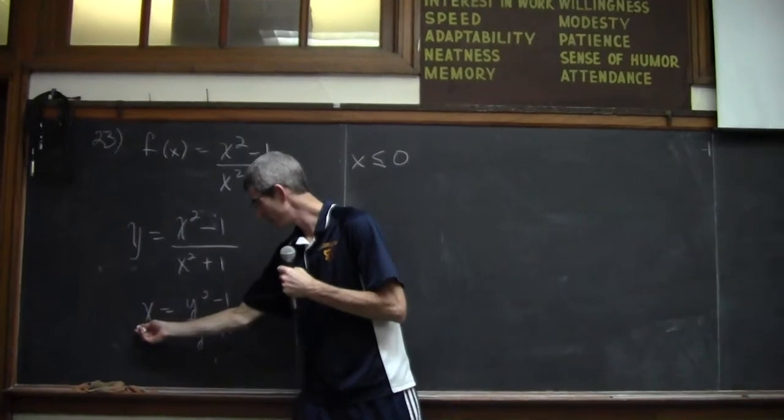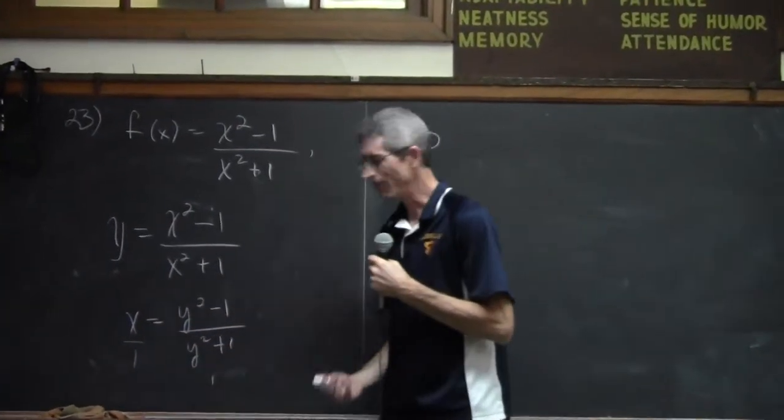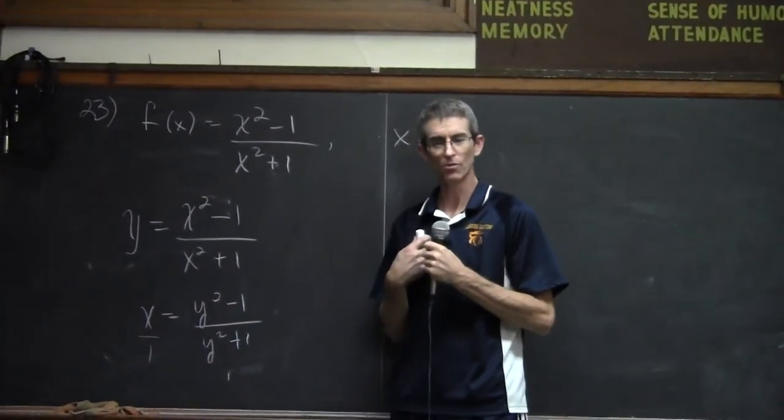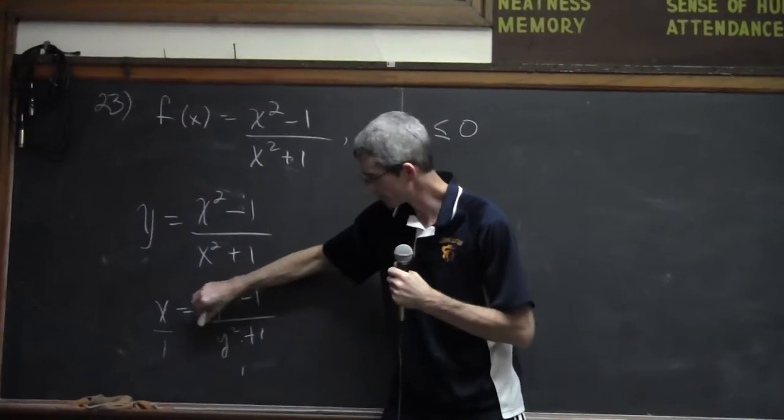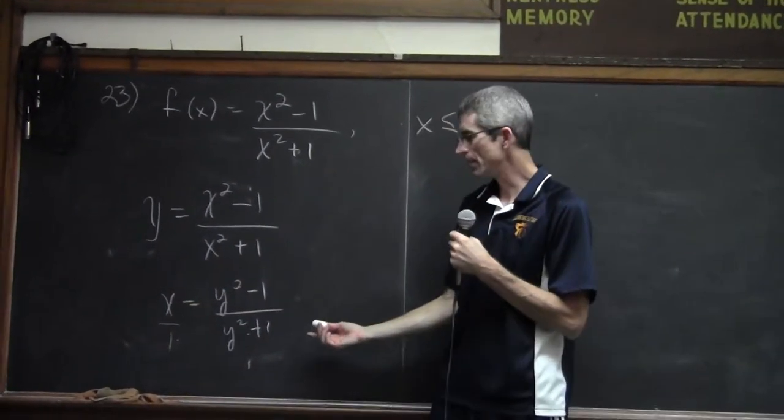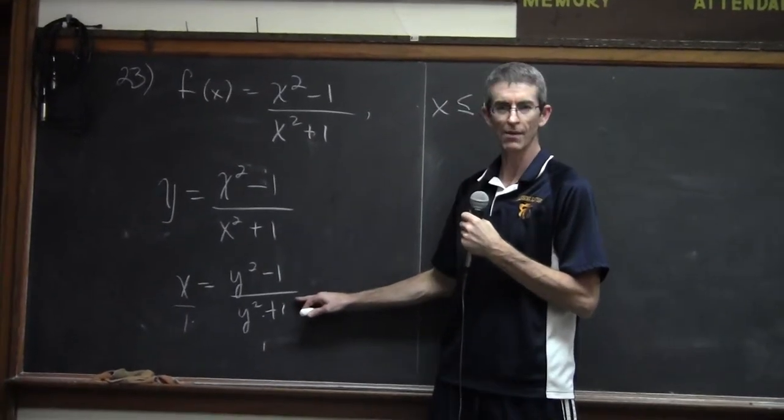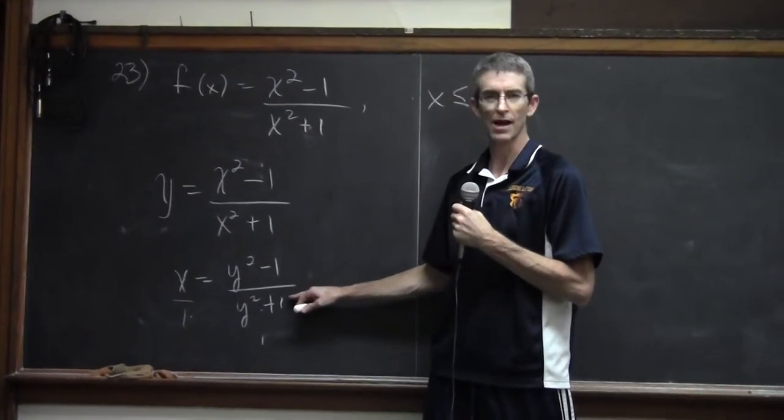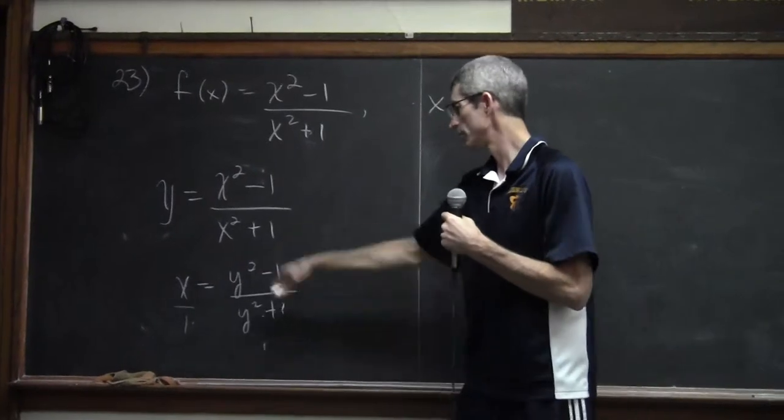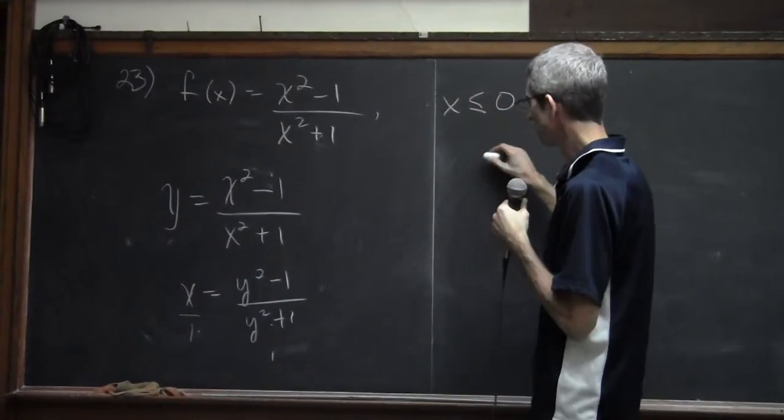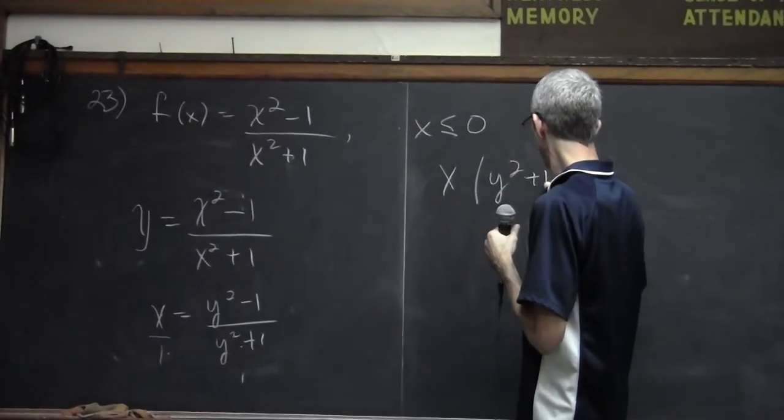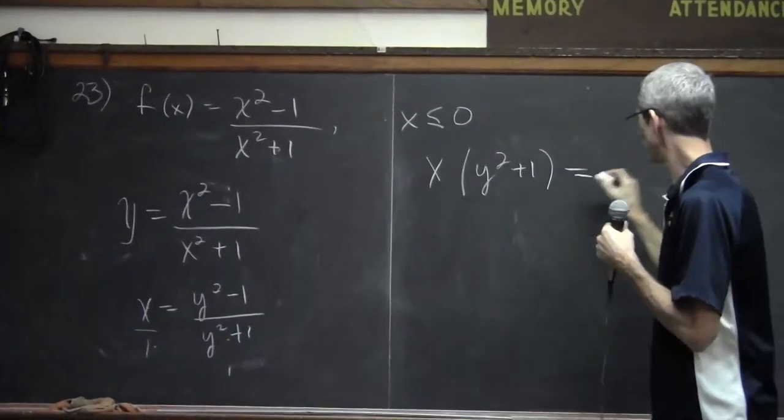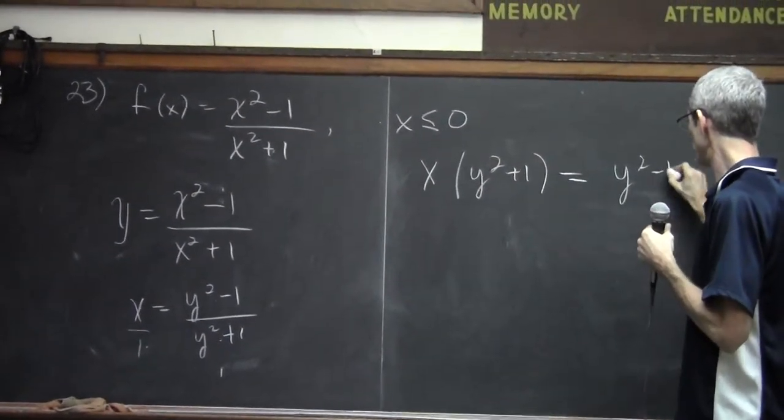So I'm looking at this as x over 1. I love to cross multiply. So I'm gonna do this times this equals this times this. Some of you may see it as you're getting rid of the denominator, so you're multiplying both sides by the denominator. It's the same thing. So I'm gonna do that. I'm gonna write over here. x times y squared plus 1 equals y squared minus 1.